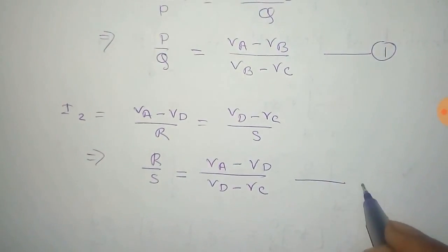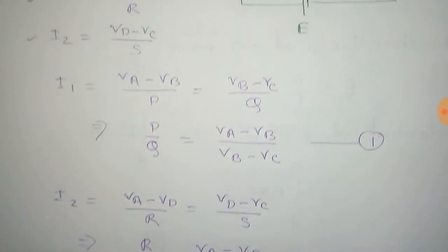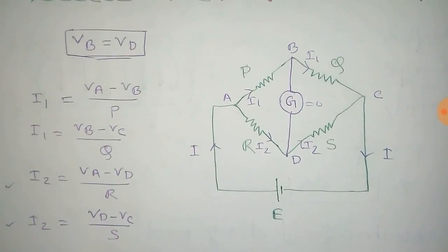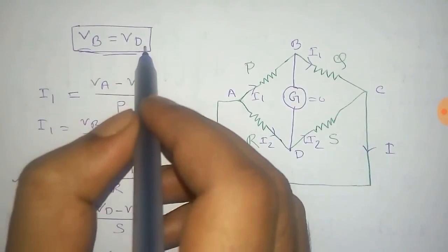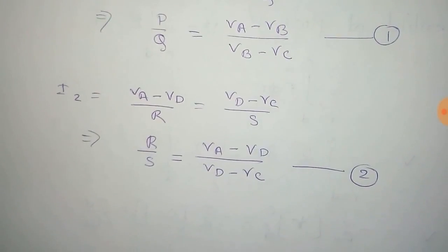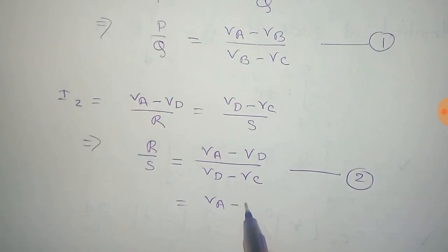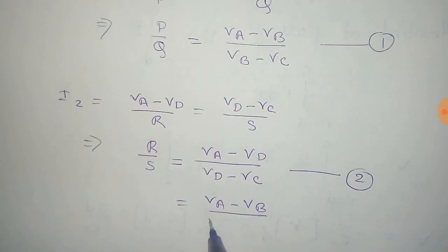And we take this as equation number 2. Now we use the null condition, that is VB equals VD, and we put this condition in equation number 2. So we put VB in place of VD, so it becomes VA minus VB by VB minus VC, and we take this as equation number 3.